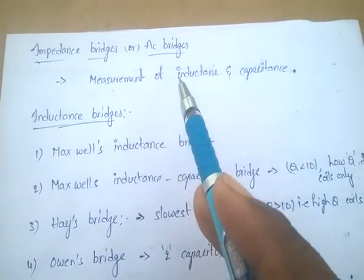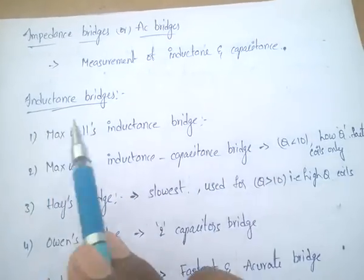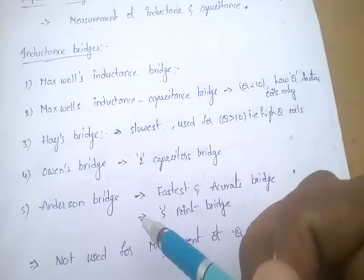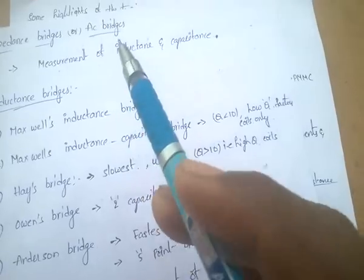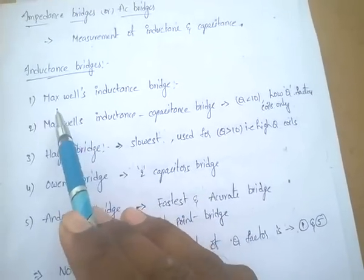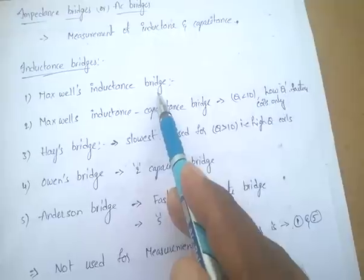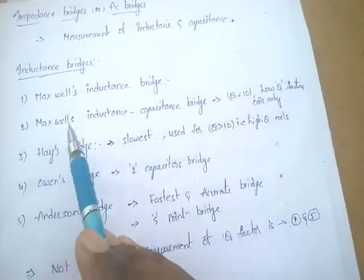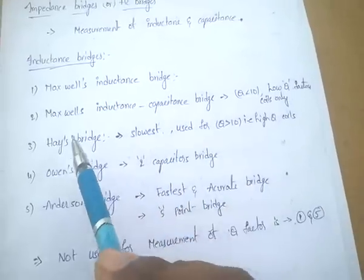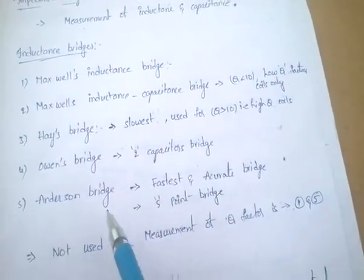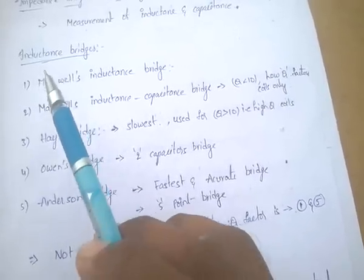In case of impedance bridges, mainly inductance bridges — which are used to measure the inductance value. The inductance bridges are: Maxwell's induction bridge, Maxwell's inductance-capacitance bridge, Hayes bridge, Owens bridge, and Anderson bridge. These five bridges are used to measure the inductance value.